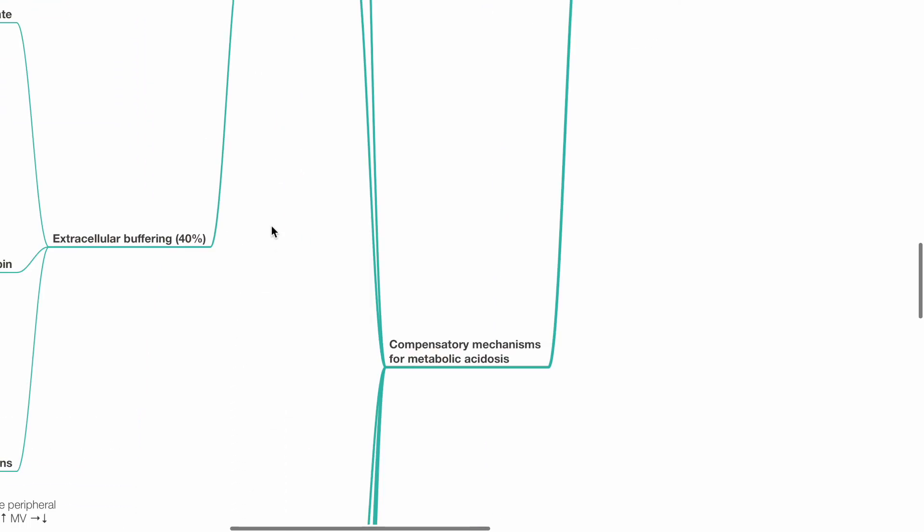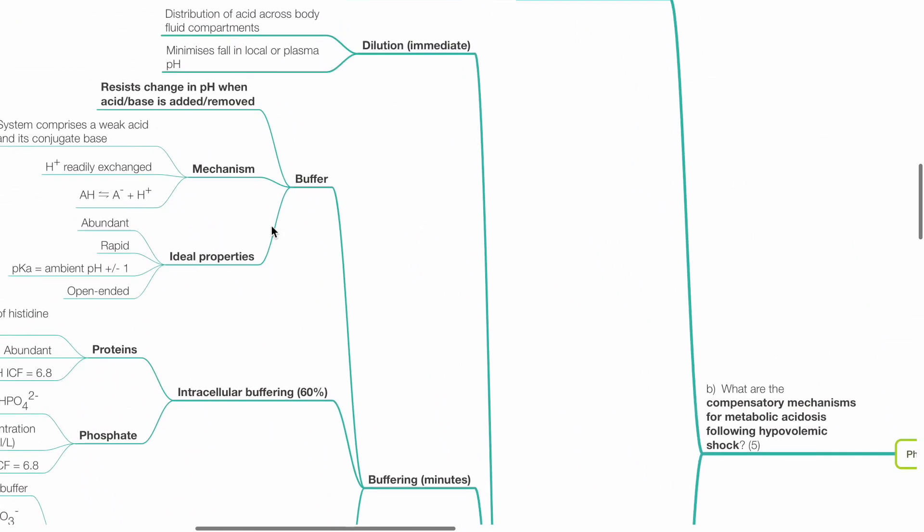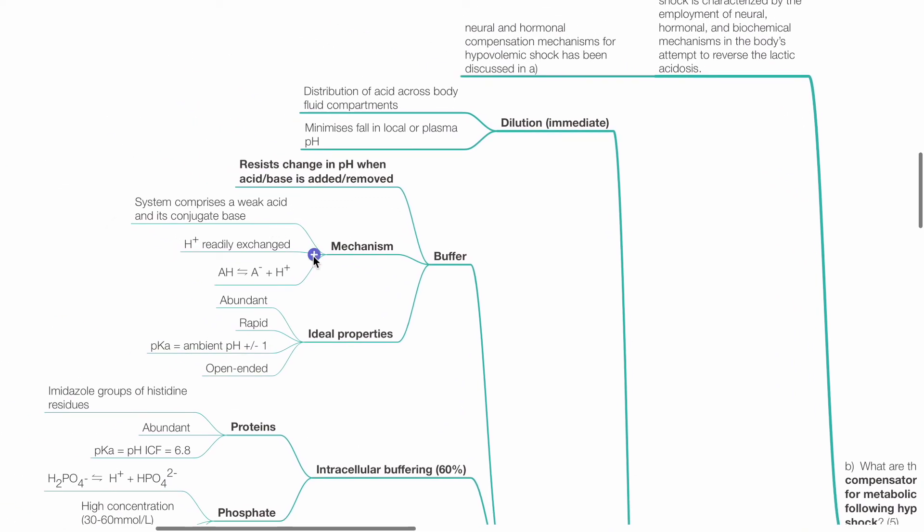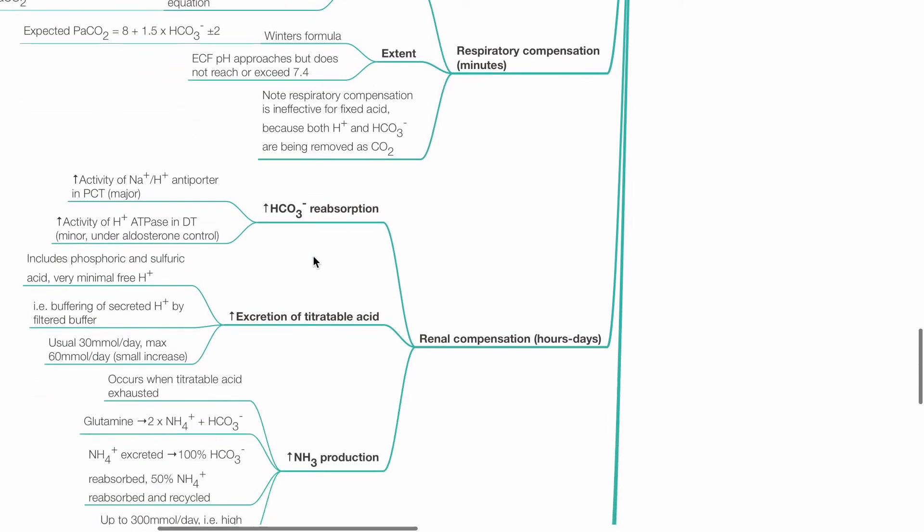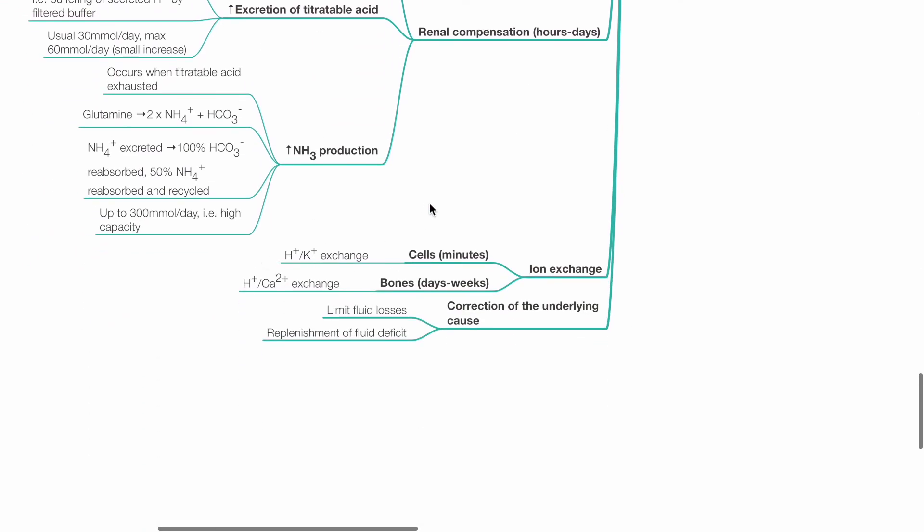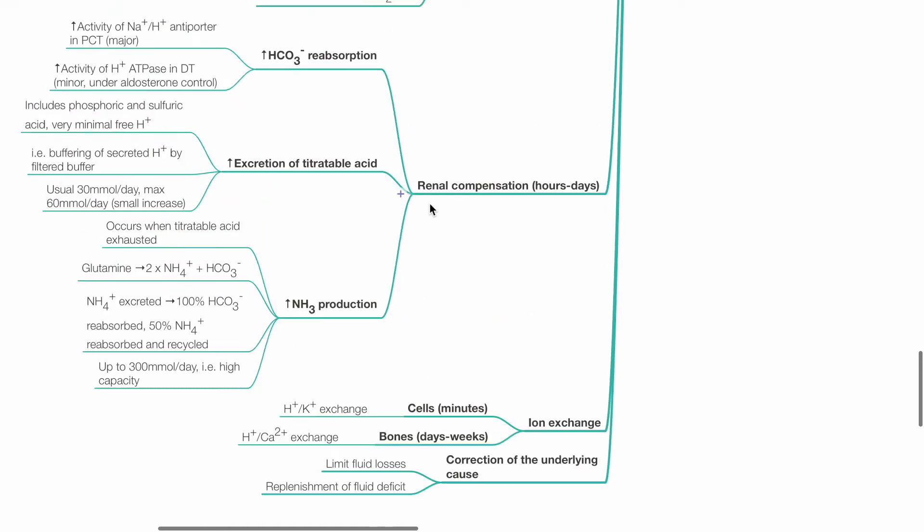Compensatory mechanisms for metabolic acidosis include dilution, buffering, respiratory compensation, renal compensation, ion exchange and correction of the underlying cause.